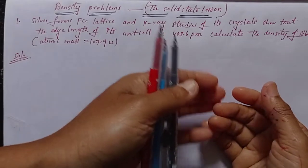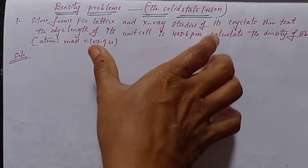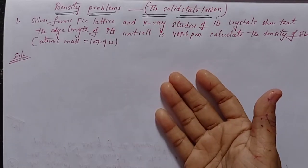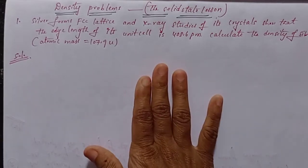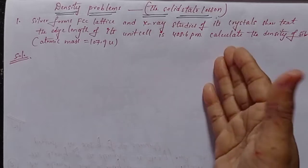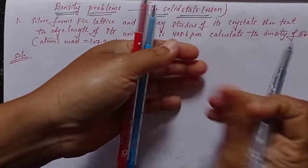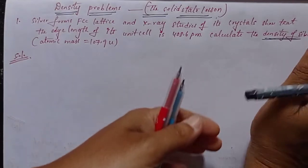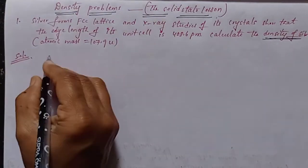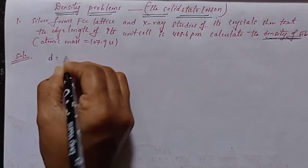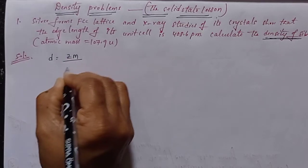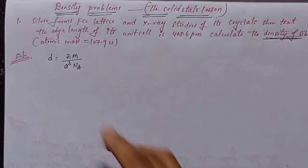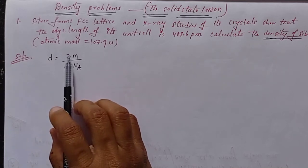I will discuss how to do this calculation using a normal calculator, step by step, so you can easily understand. We have to find the density of the silver unit cell. The density formula is: density is equal to z times m divided by a-cubed times Nₐ.